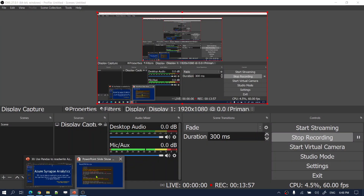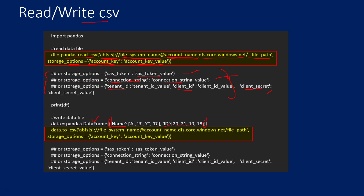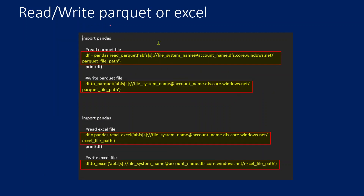This is how you use 'read_csv' to read data and 'to_csv' to write data. Similarly, if you want to work with a parquet file, use 'read_parquet' to read and 'to_parquet' to write. For Excel files, use 'read_excel' to read and 'to_excel' to write. Parquet and Excel are left as homework for you to try in the same fashion.